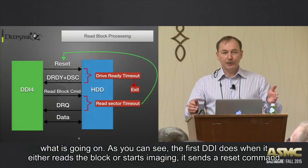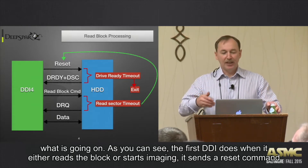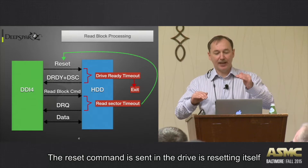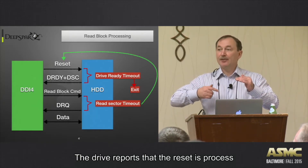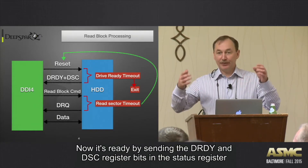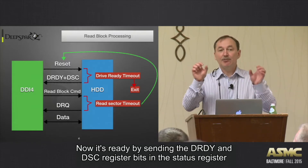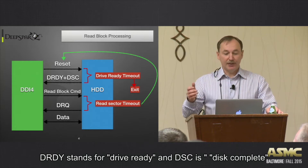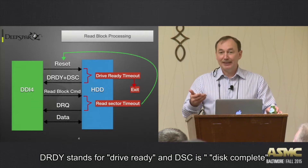The first thing when DDI reads any block or starts imaging, it sends a reset command. The drive resets itself and reports that the reset is processed and it's ready by setting the DRDY and DSC bits in the status register. DRDY stands for drive ready, and DSC for disk seek complete.